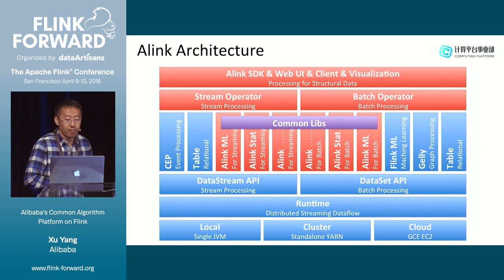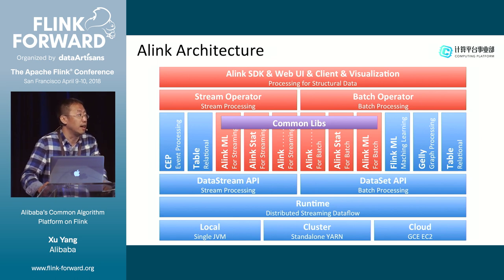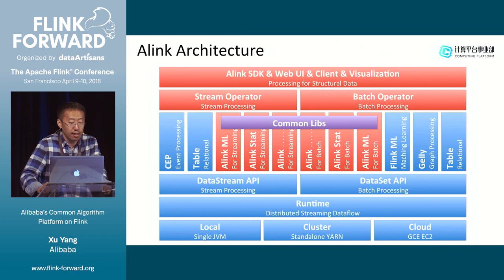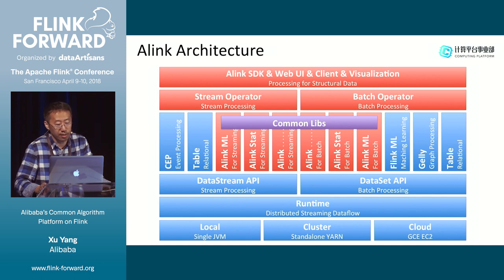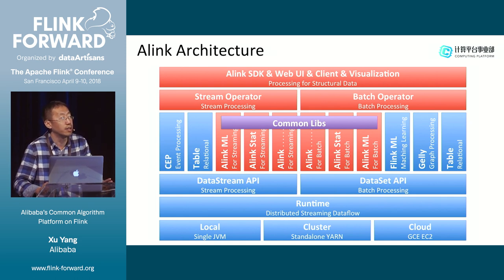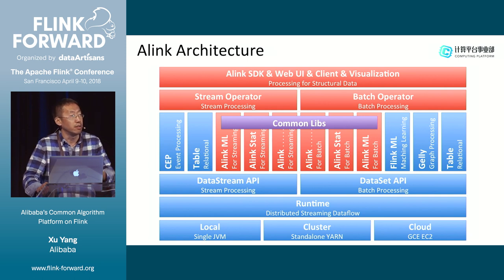This is the architecture. The blue part is the same as the Flink architecture, and the right one is Alink. The lower layer has extended algorithm libraries, such as statistical algorithms for batch and streaming, and machine learning for batch and streaming. There is also a layer of common libraries — this is very important, as algorithms share common parts between batch and stream implementations, such as metrics and computation.